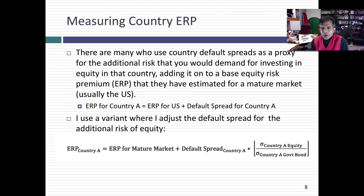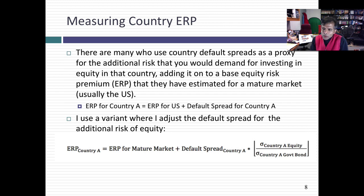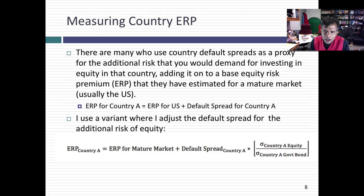One of my problems with this approach is you are assuming that the default spread on a government bond issued by a country is a good measure of the additional risk premium you would demand for investing in equity in that country. Intuitively, equity is riskier than a government bond — if I'm demanding a 2.63% default spread for Brazil, I should be demanding a larger spread for its equity.